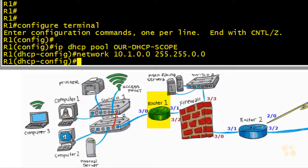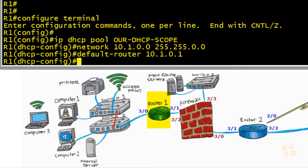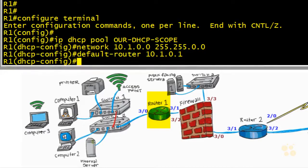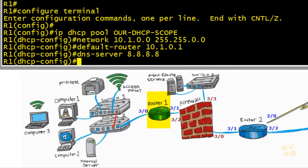If we want to hand out a default router to give clients a default gateway, the syntax on a Cisco IOS router is default-router followed by the IP address. The concept of a gateway and a router are virtually synonymous. If we want to inform our DHCP clients about a DNS server to use, the syntax is dns-server followed by the IP address. In this case we're using 8.8.8.8, which is a DNS server provided by Google.